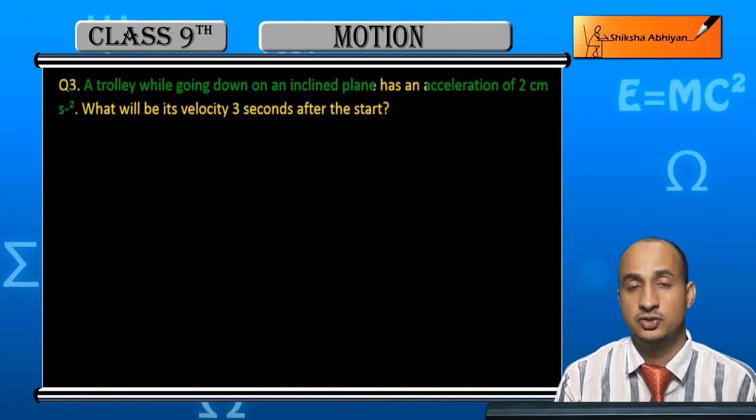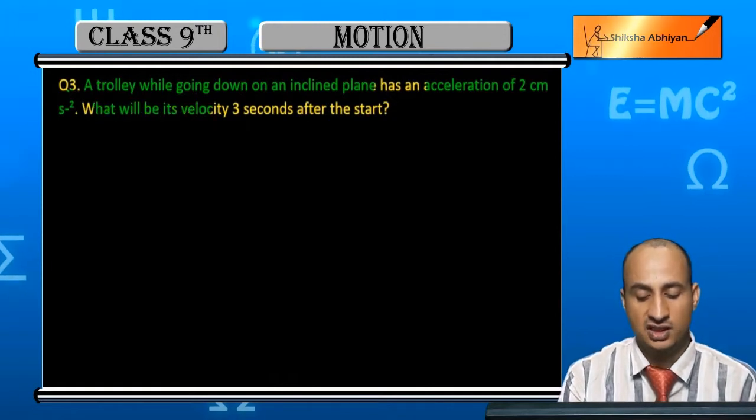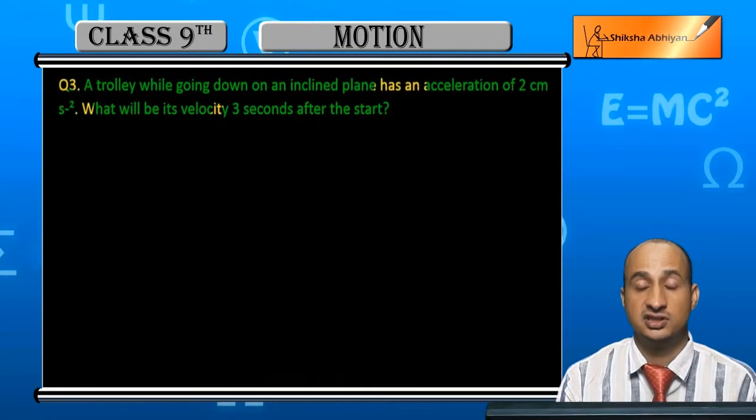And here, what will be the initial velocity U? It will be 0. And look at the final velocity. What will be the velocity 3 seconds after the start? After the start, the final velocity is 3 seconds.